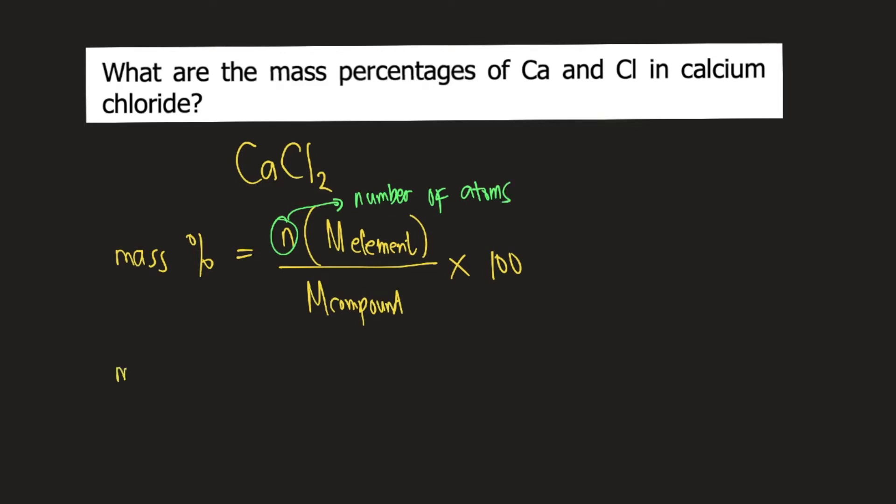Let's start with the mass percentage of calcium. If you check the chemical formula, CaCl2, you only have one calcium atom.